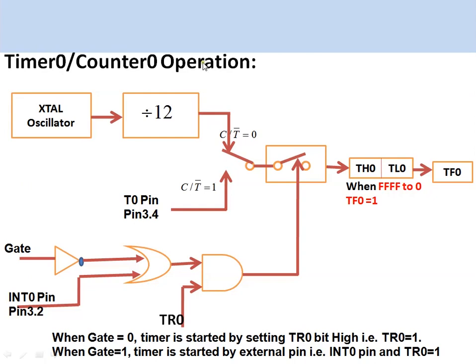This section describes the Timer 0 or Counter 0 operation. When the C/T-bar bit is set to 0, Timer 0 is configured as a timer and is used for generating time delays.